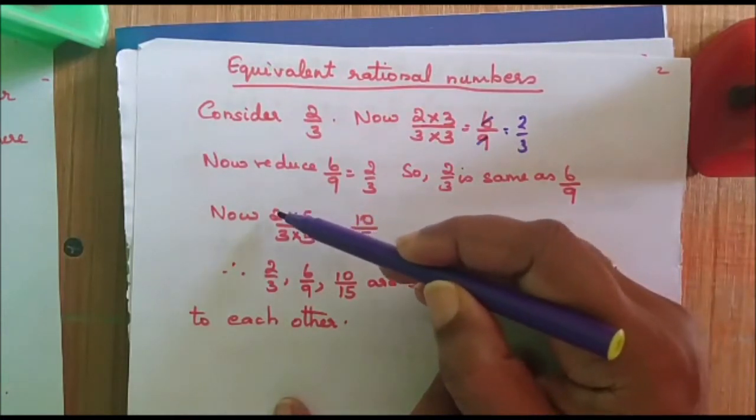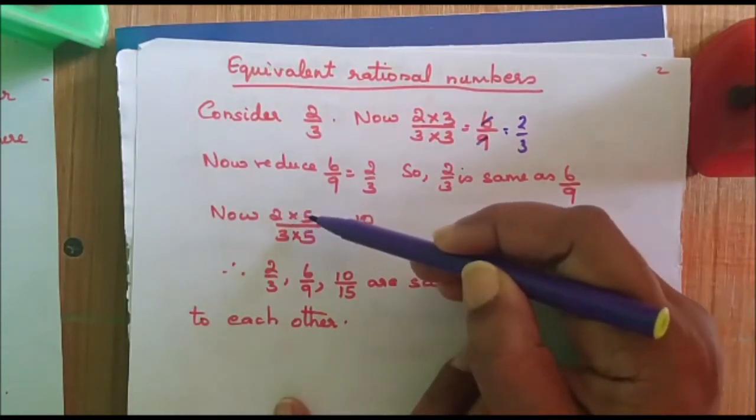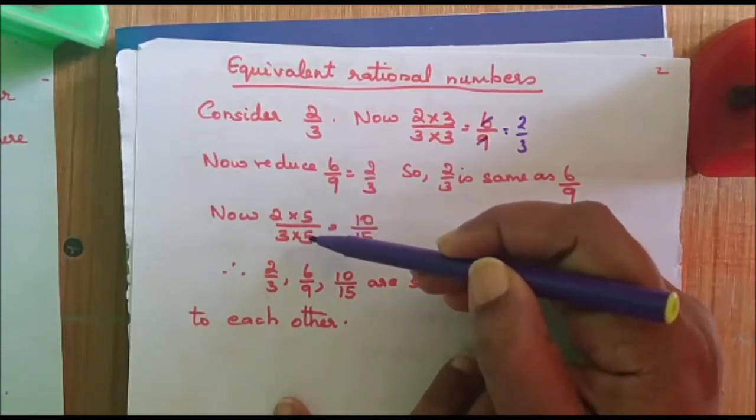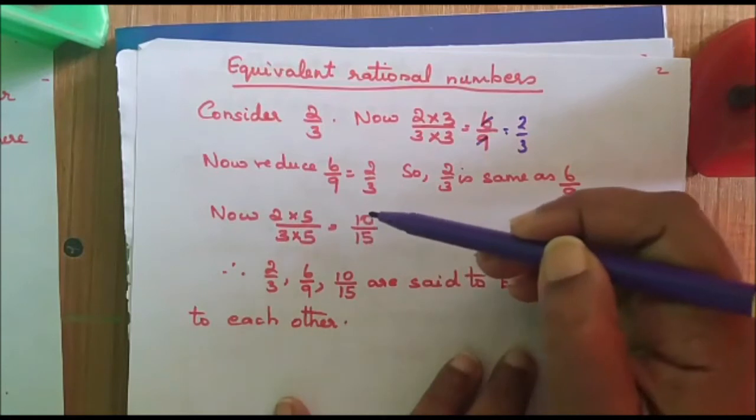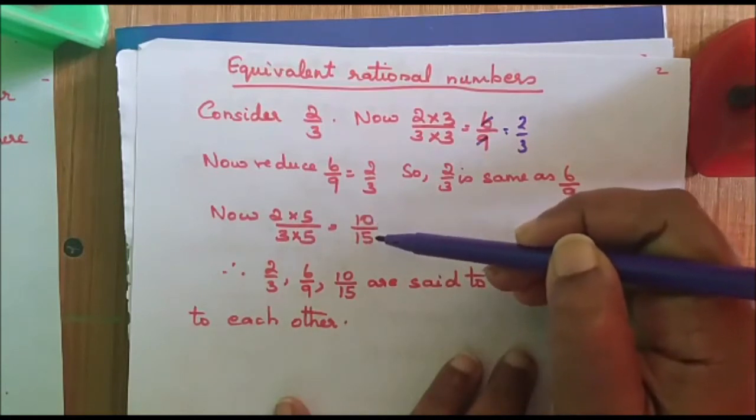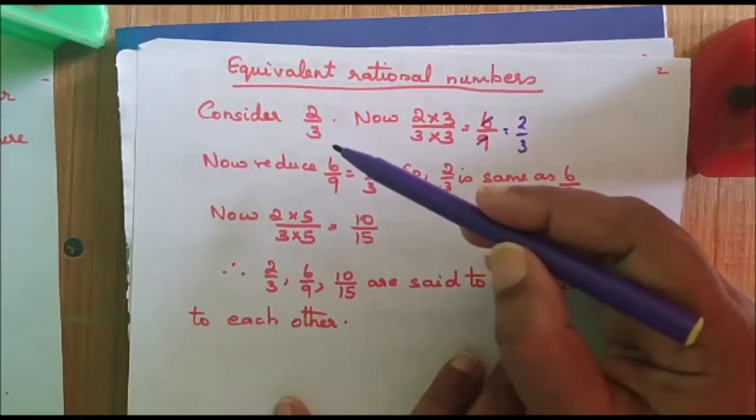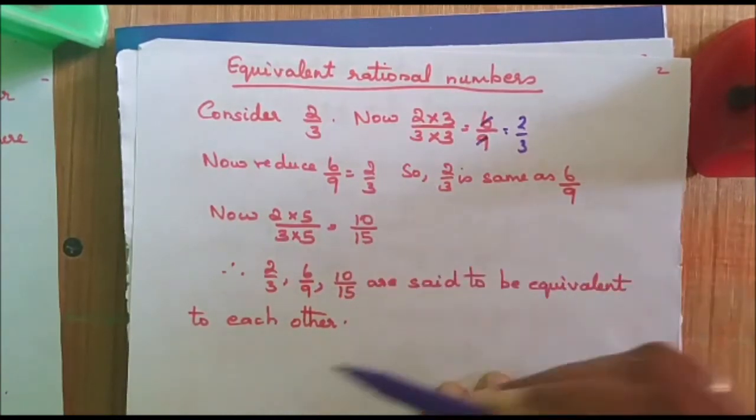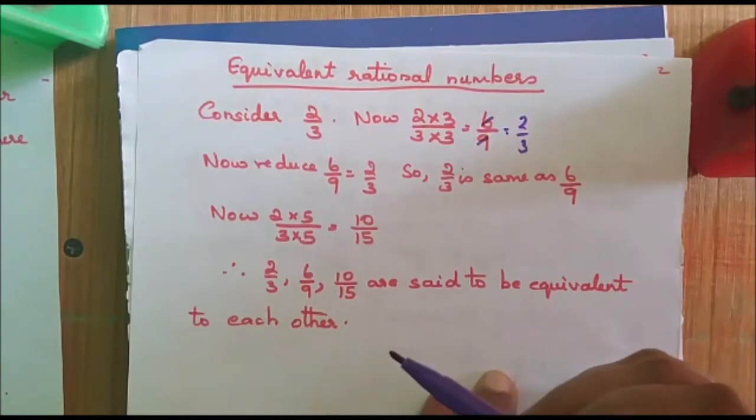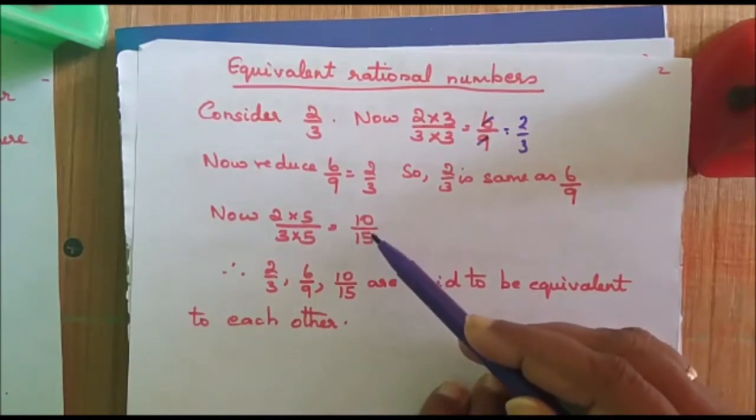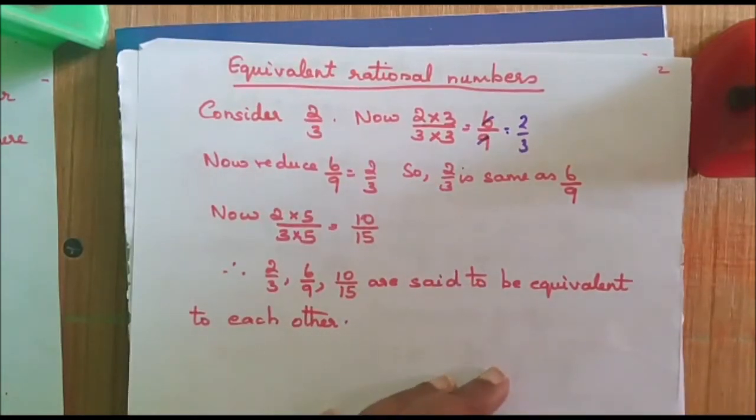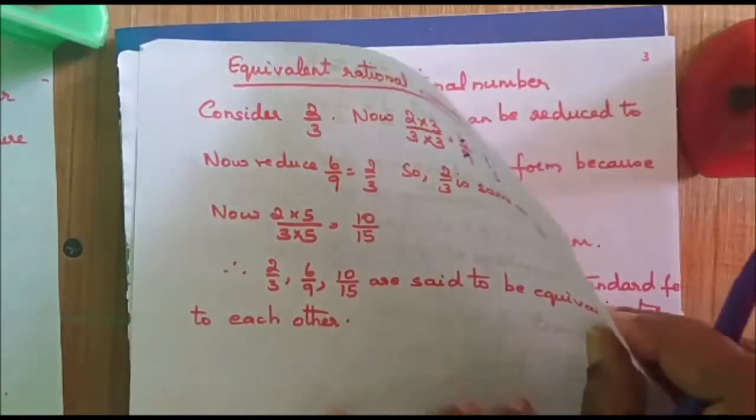Similarly, if I multiply 2 by 5 and 3 by 5, that is, I am multiplying the numerator and the denominator by 5, I get 10 by 15. Therefore, 2 by 3, 6 by 9 and 10 by 15 are said to be equivalent to each other. Because now, if I reduce 10 by 15, I will get 2 by 3. I hope you got what is meant by equivalent rational numbers.